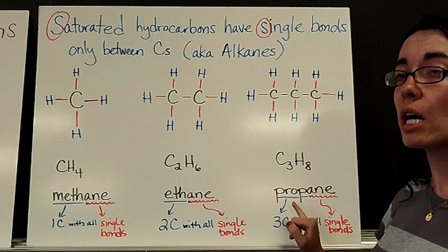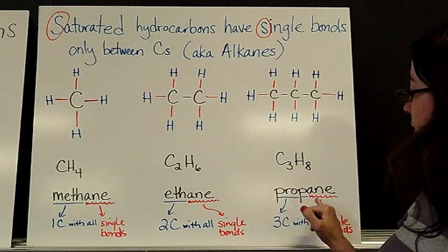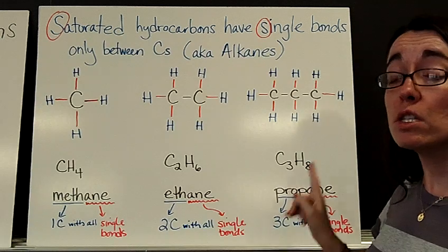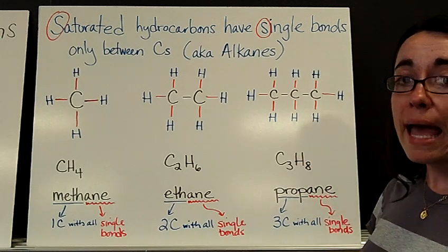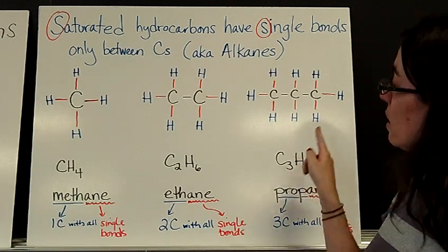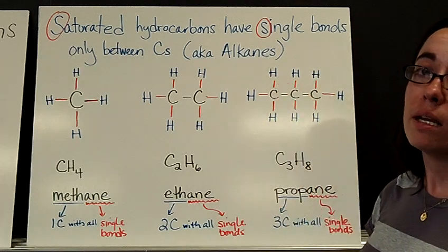The formula for this is C3H8. If you use Table P, P for prefixes, you will see that the prefix we're going to use for three carbons is prop, and then -ane ending tells us it's all single bonds. So this is propane. If you have a gas grill that might be run by propane, this is the molecule that's heating up your hamburger.